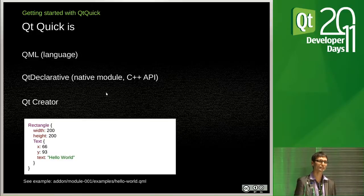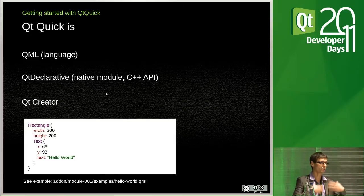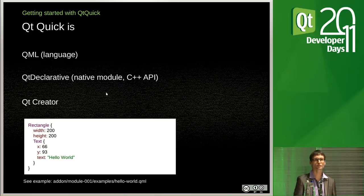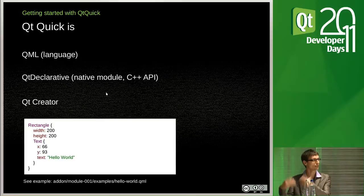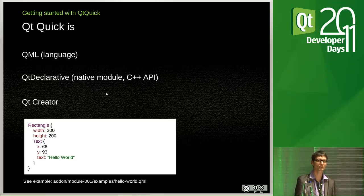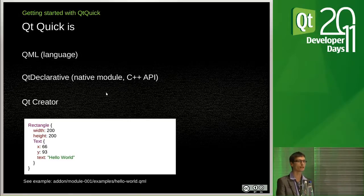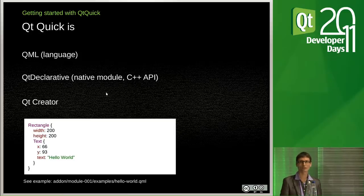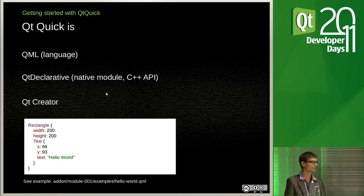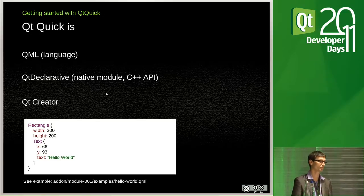Then you have Qt Declarative — the library and module in the Qt library used to parse your QML file and run it. It's also used to create a bridge between C++ code and your interface code. Finally, you have Qt Creator integration, which comes with a syntax highlighter for QML files, auto-completion, a debugger for QML files, and tools to package the whole thing for phones — for example, in Qt Creator you have targets to package your application for Nokia phones.